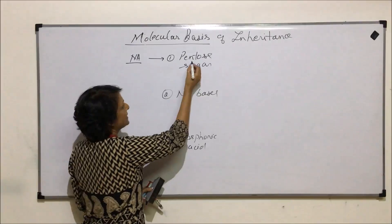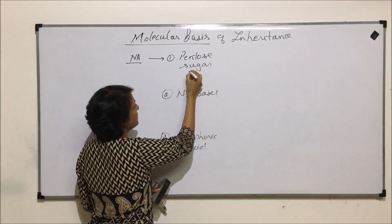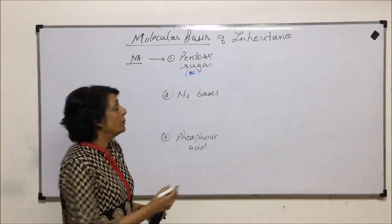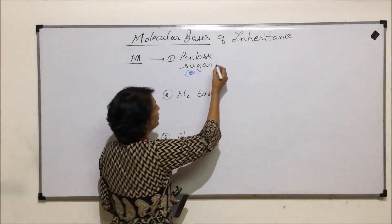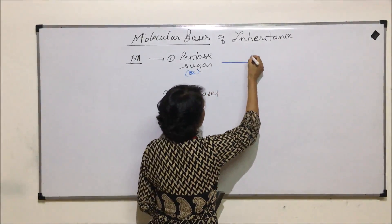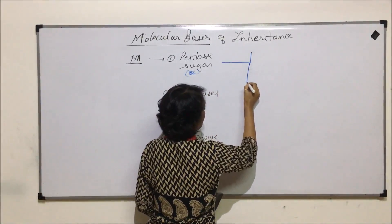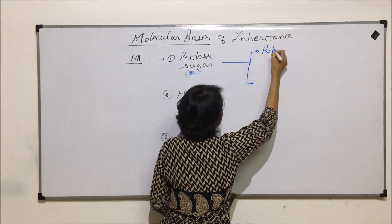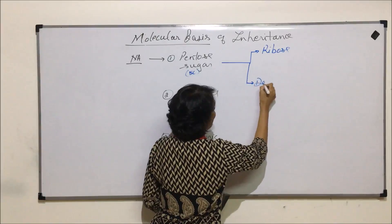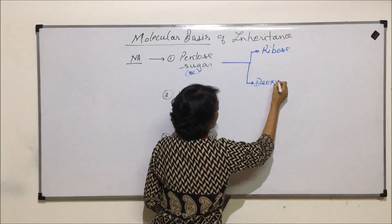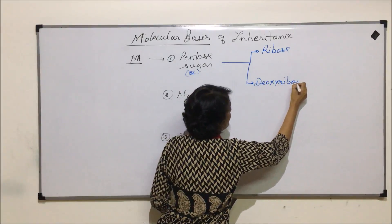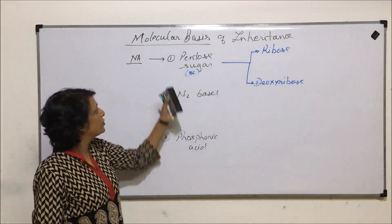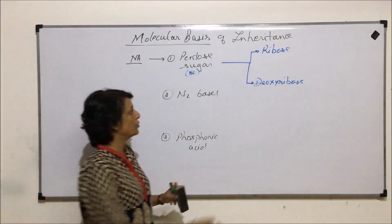Pentose sugar, as the name tells us, it is a 5-carbon sugar. The pentose sugars are of two types: ribose and deoxyribose. Both these sugars are 5-carbon sugars, pentose sugars.